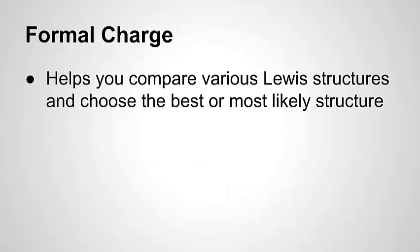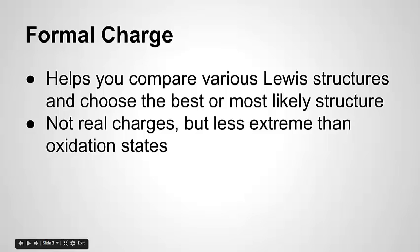Formal charge is a way of comparing various Lewis structures that you might be able to draw for a molecule, and it helps you choose the best or most likely structure. Formal charges are not real charges — they're implied, and they're less extreme than oxidation states. Oxidation states are very much fixed on the atom. Formal charges are just used to help you figure out whether or not your structure makes sense.